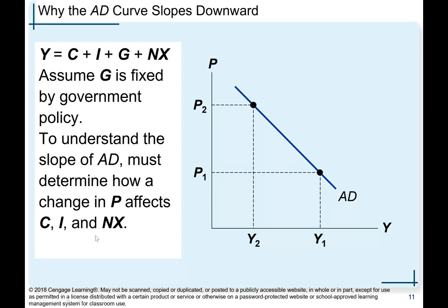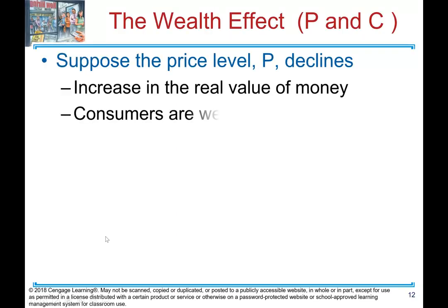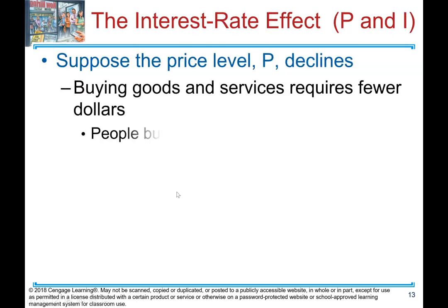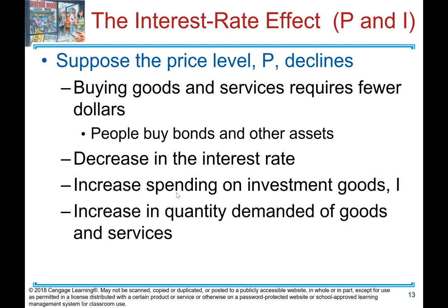The wealth effect — price and consumption: suppose the price level P declines. There is an increase in the real value of money. When price goes down, people feel wealthier — the money can buy more. Consumers are wealthier, there is an increase in consumer spending, and there is an increase in quantity demanded of goods and services.